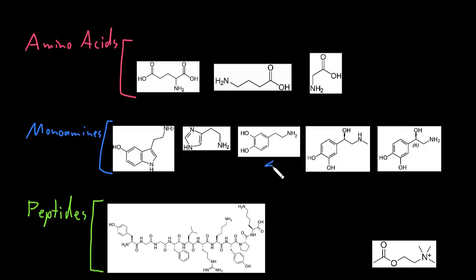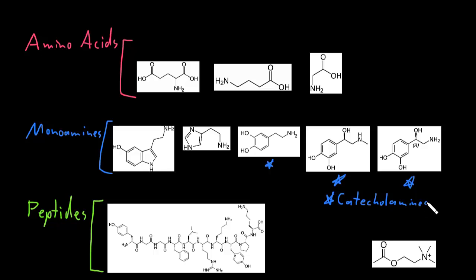Some of the monoamines — these three — are also called by a different name: the catecholamines. Catecholamines are a subgroup of the monoamines. The catecholamines have a catechol group, which has a benzene ring and two hydroxyl groups. All three of these catecholamines share this catechol group.